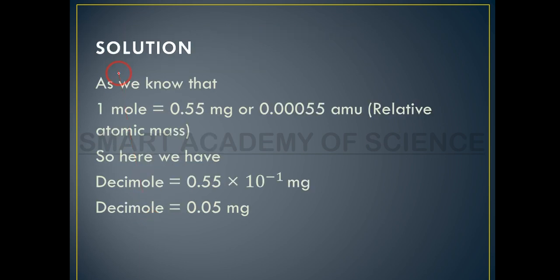Solution: as we know, 1 mol is equal to 0.35 mg or 0.0055 amu relative atomic mass.